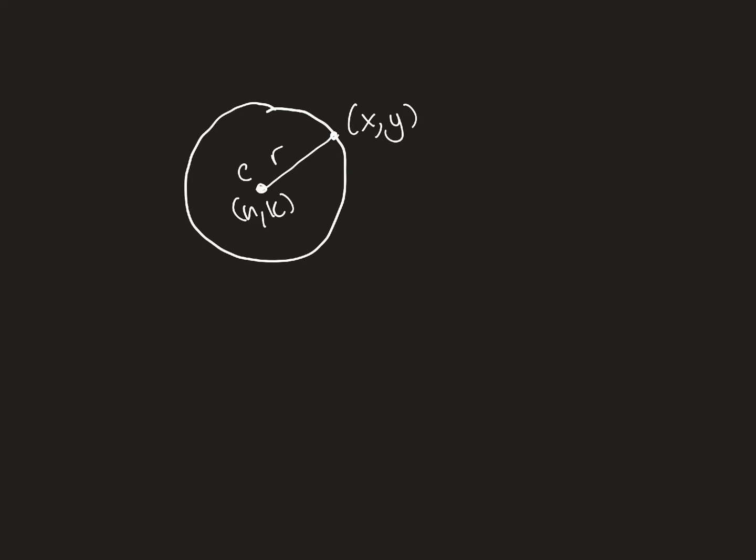We used the distance formula to come up with the completed square form of the circle. The distance formula is the square root of the difference of the x's squared, and this is derived from the Pythagorean theorem. So, the difference from the x's squared plus the differences of the y's squared. If we square both sides, we get (x-h)² + (y-k)² = r².